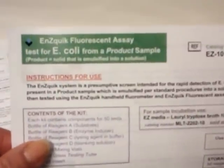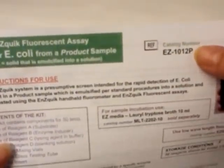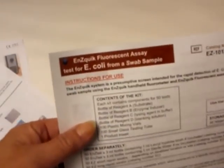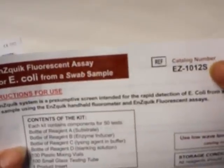If you are testing samples such as food or cosmetics that need to be emulsified, then you will use the kit that contains the letter P for product. If you are collecting a sample that requires a swab for collection, such as when testing surfaces, then you will need to follow the product insert which contains an S for swab.